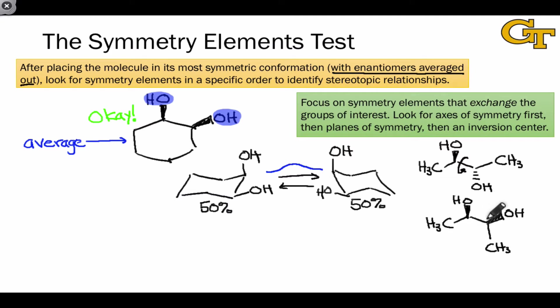However, this alternative conformation is an eclipsed conformation. It's not the most stable conformer of this molecule. However, like the cyclohexane case, it is the average of two enantiomeric staggered conformations. And because interconversion between those staggered conformations is rapid, remember rotation around single bonds is very rapid, it's okay to judge stereotopic relationships using this eclipsed conformation.